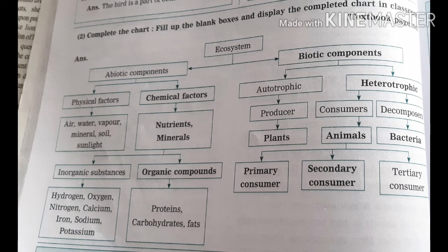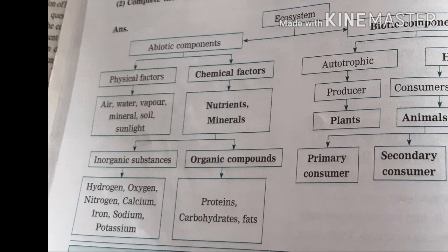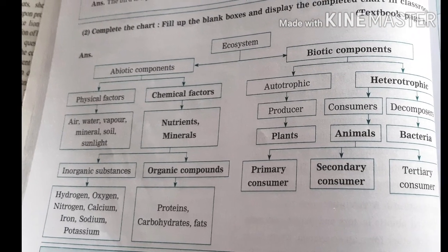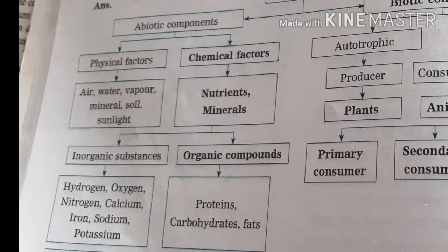Students, here the chart of ecosystem is seen. Fill up the blank boxes and display the completed chart in the classroom. Ecosystem has two types of components: abiotic components and biotic components. Types of abiotic components are physical factors and chemical factors.